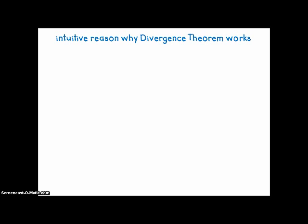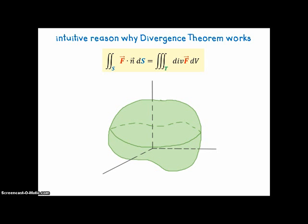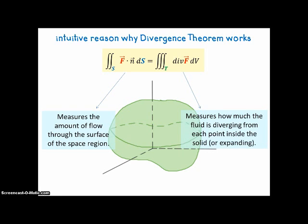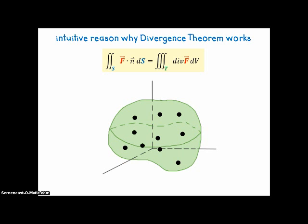Now the intuitive reason why the divergence theorem works. Here we have the two integrals — the surface integral and the triple integral over a volume. This one measures the amount of flow through the surface of the space region, because we're doing F dot N, and N is perpendicular to the surface, so we're going out through the surface. And this one measures how much the fluid is diverging from each of the points inside the solid, or how it's expanding away from the points. So if the fluid is moving away from the points, it makes sense that that would be the same as what you end up having going through the surface. You've got all these little points inside, and the fluid is diverging from those points and then through the surface.